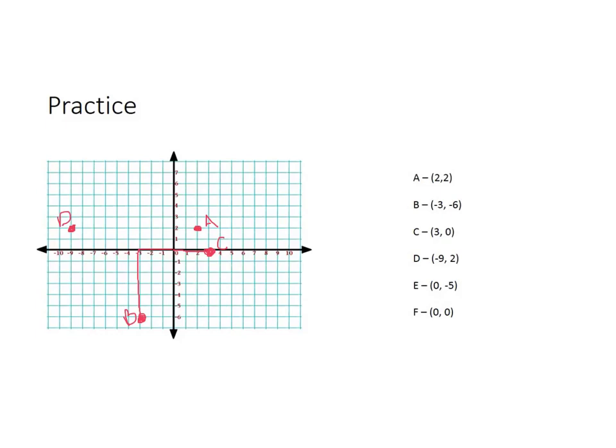E is (0, -5). The 0 tells us that once we get to the origin, we're going to stay put, and we're not going to go left or right on the x-axis. But the negative 5 means we're going to go down, but we're going to stay right there on that y-axis because the x didn't move anywhere, and that's E. F is (0, 0), which you remember is smack dab in the middle of the x- and y-axis, and that's also called the origin, and that's where F is.